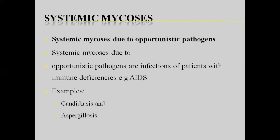Systemic mycoses can also be due to opportunistic pathogens. Some fungi are present in the human body as normal flora but do not cause infections. These are known as opportunistic pathogens — they are present in the body without causing harm. However, whenever the host is immunocompromised or immunodeficient, they get the opportunity to multiply and cause disease. Examples include candidiasis and aspergillosis.